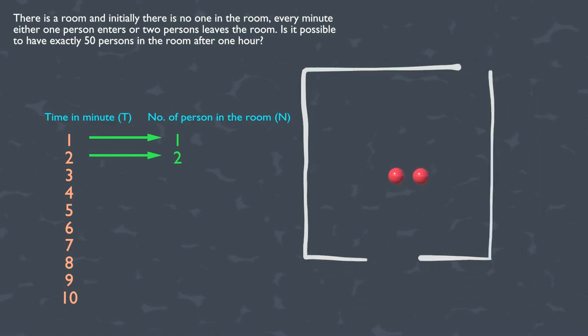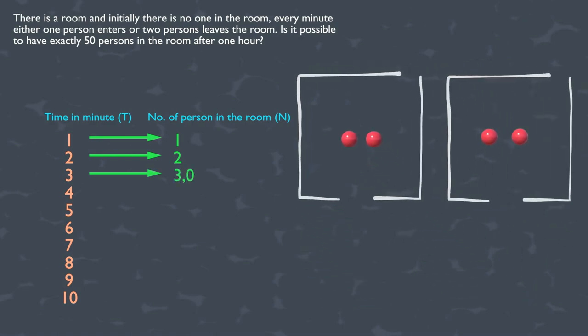But after three minutes, there are two options available for us. Either one person can enter, which will give us a total of three persons in the room, or two persons can leave, which leaves us with no one in the room.